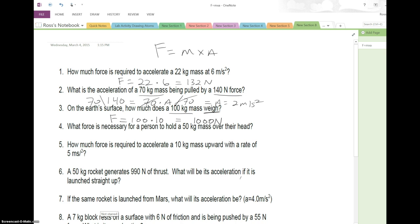Number four: what force is necessary for a person to hold a 50 kilogram mass over their head? Again, we're solving for force. F equals the mass, 50, and then we multiply it by the acceleration. If I'm holding it over my head, what downwards acceleration would be acting on it if I let go? That's acceleration due to gravity, so it's times 10. That equals 500 newtons. To put that in perspective, 50 kilograms is about 110 pounds, like holding up a decent sized human being over your head.